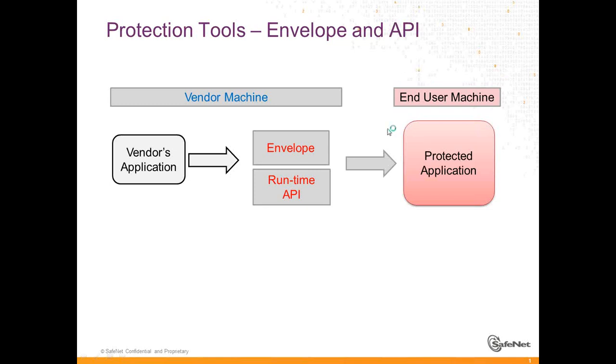Hello, this is Eli at SafeNet. This presentation is about protection tools: the envelope and the runtime API, also known as the licensing API.